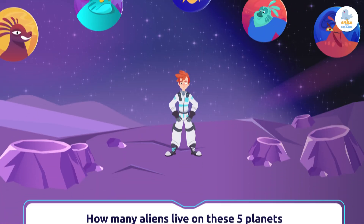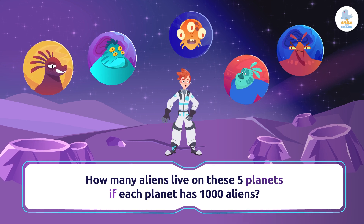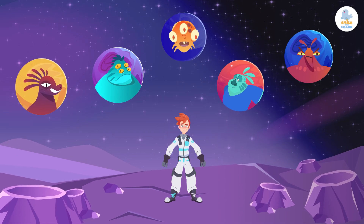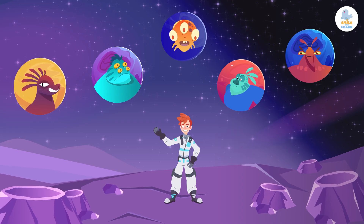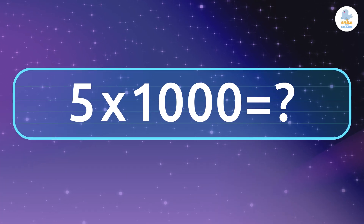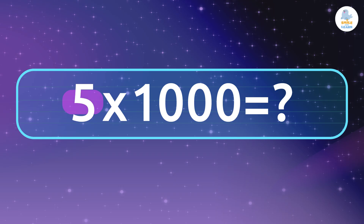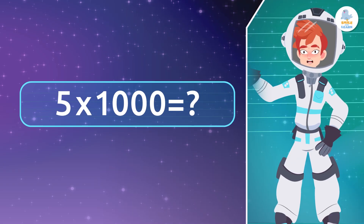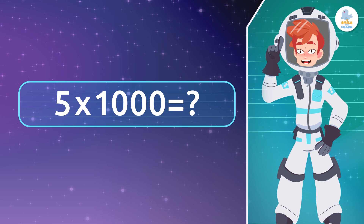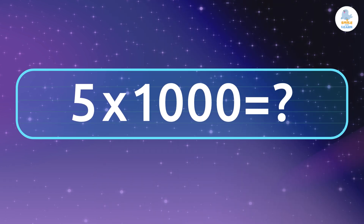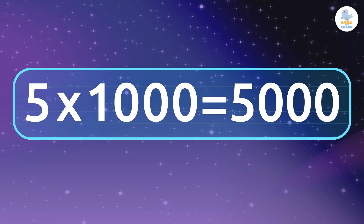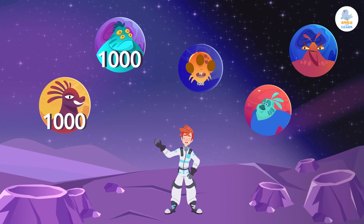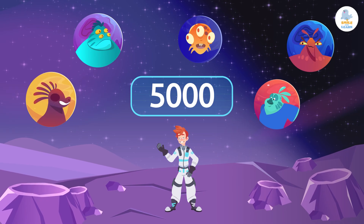How many aliens live on these five planets if each planet has one thousand aliens? On to the third trick — how do we quickly multiply by one thousand? If one thousand aliens live on each of these five planets, we have to multiply five times one thousand. Let's use our trick: we write the number five first and then add the three zeros from the number one thousand. So there are five thousand aliens in total.